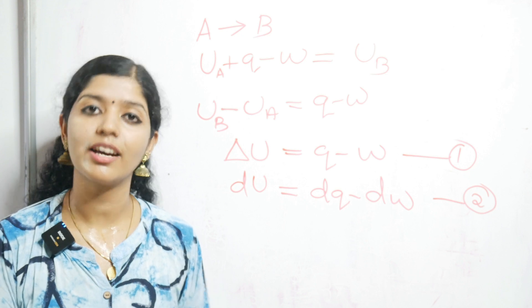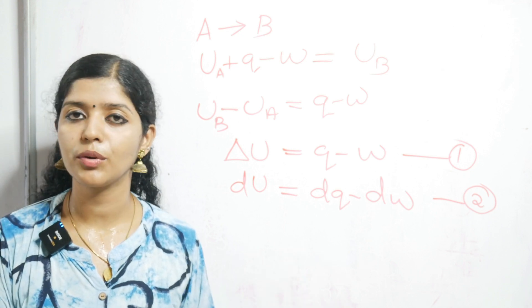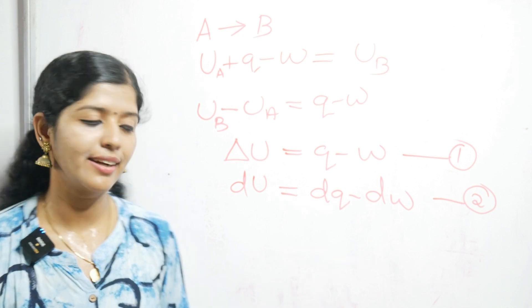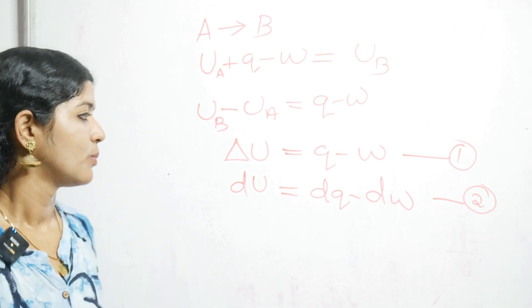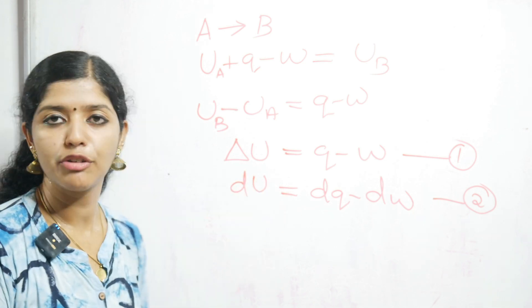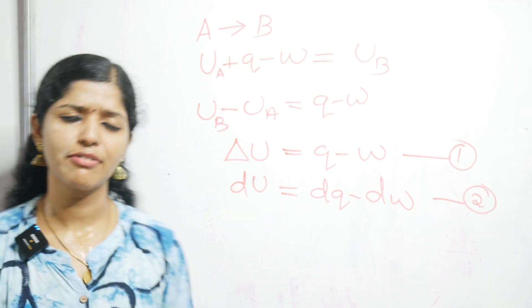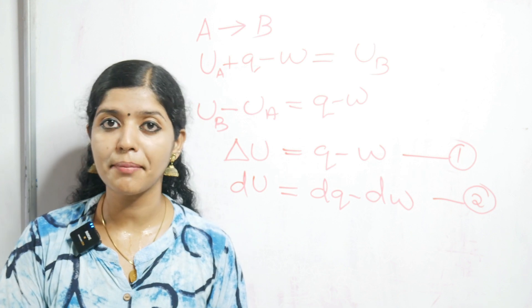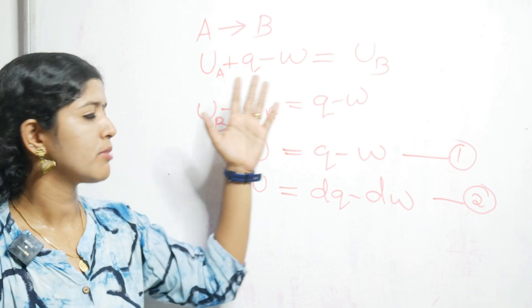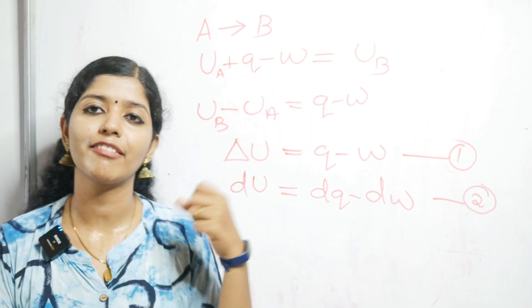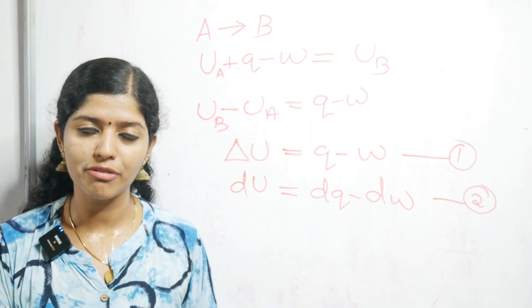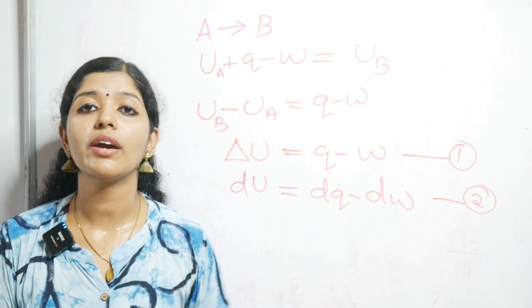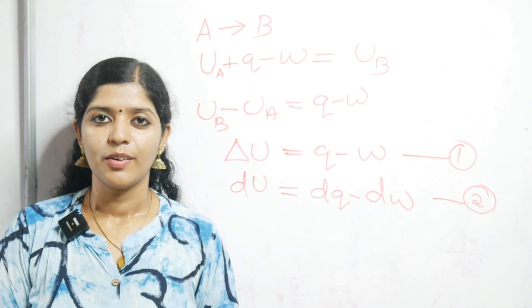If you have any doubt at any step, please feel free to comment in my comment box — I will reply. Now we have two equations. Till now we have been speaking about system A: system A has done work, system A has absorbed Q amount of energy, and system A is converted into system B. Now we are going to speak about the surroundings.